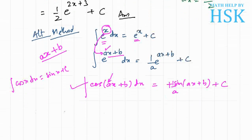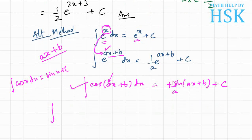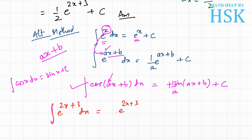The logic here is quite clear. Now applying this to our question: we have to integrate e to the power of 2x plus 3. By the method discussed, this equals e to the power of 2x plus 3, and because the coefficient of x is 2, we write 1 upon 2, giving us 1 upon 2 times e to the power of 2x plus 3 plus c.